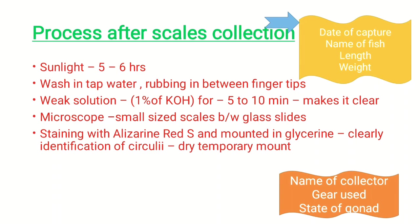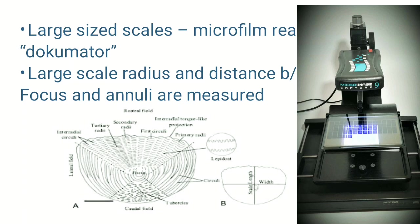To summarize the procedure: scales are kept 5 to 6 hours in sunlight to remove moisture and reduce fungal growth, then washed in tap water, rubbed clean, and examined under the microscope between two glass slides. For the dry temporary mount, Alizarin Red S staining with glycerine mounting helps identify circuli clearly. For large-scale specimens, the scale can be viewed on microfilm using a device called a documenter.